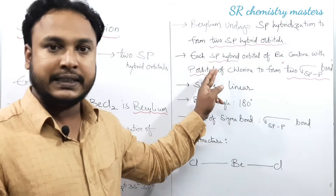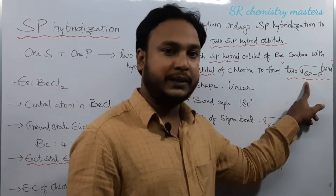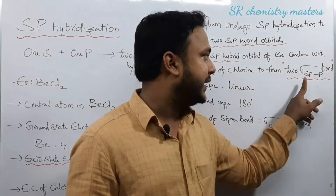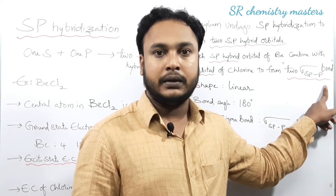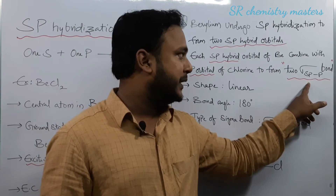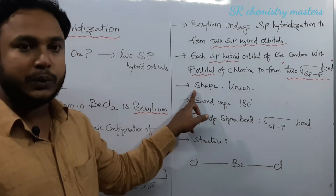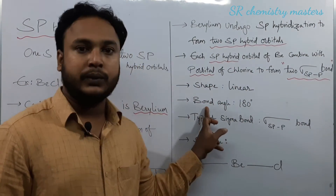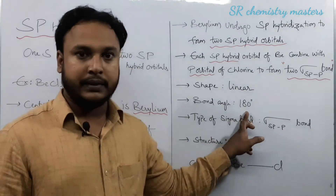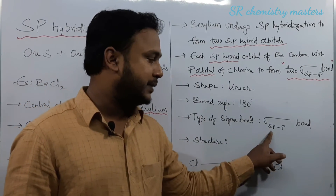In BeCl₂, two sigma sp-p bonds are formed. SP is the hybridization present in beryllium and p is the pure orbital present in the chlorine atom, so the bond is formed between the SP hybrid orbital of beryllium and the p orbital of chlorine. The shape of BeCl₂ is linear, and the bond angle is 180 degrees.